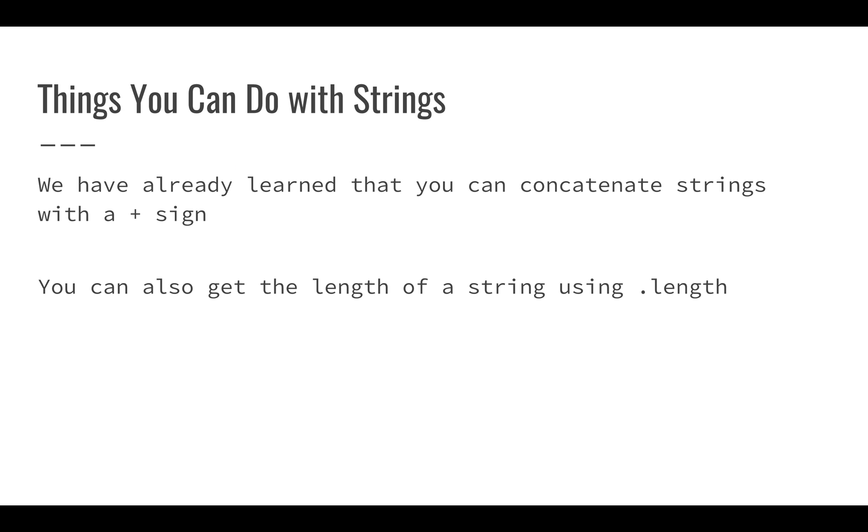We know that you can concatenate strings with a plus sign. But you can also find out the length of a string. If I have a variable and use dot length after it, that will tell me how long the string is. I could create a string and then another variable that shows me the string and how long it is. This dot length tells me exactly how many characters are in my string. Characters are anything like a space, letter, symbol, or number.